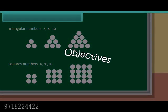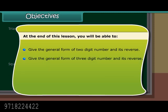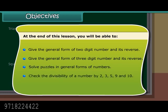Objectives: At the end of this lesson you will be able to give the general form of a two-digit number and its reverse, give the general form of a three-digit number and its reverse, solve puzzles in general forms of numbers, and check the divisibility of a number by 2, 3, 5, 9, and 10.